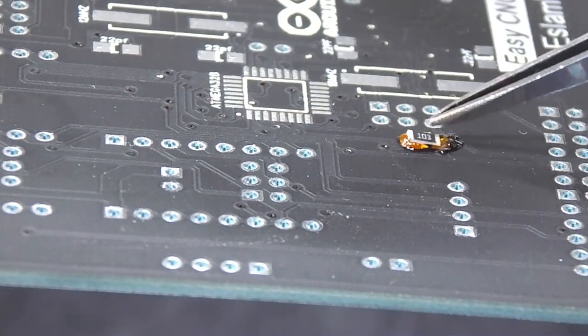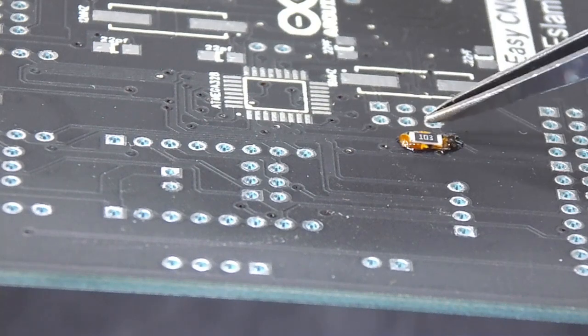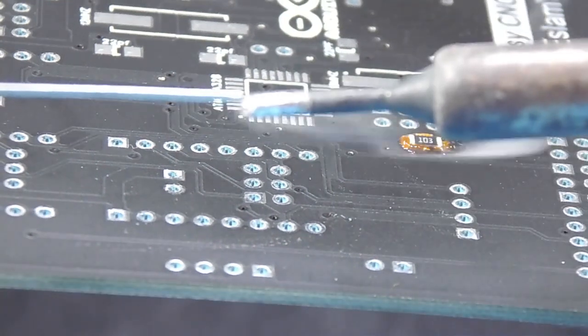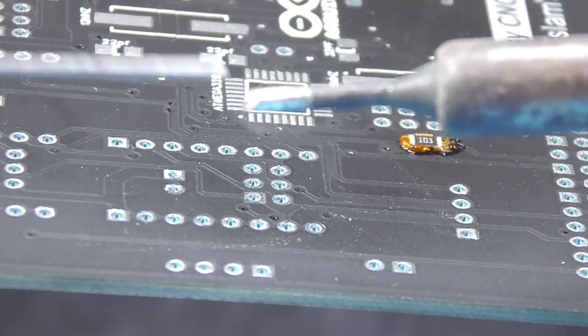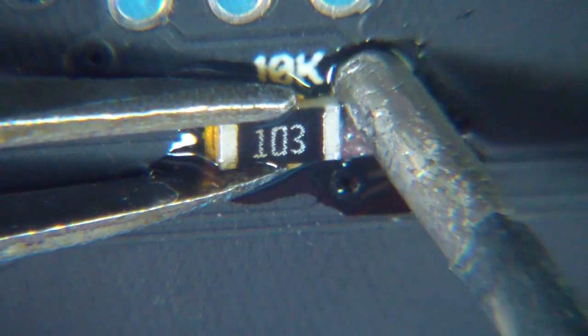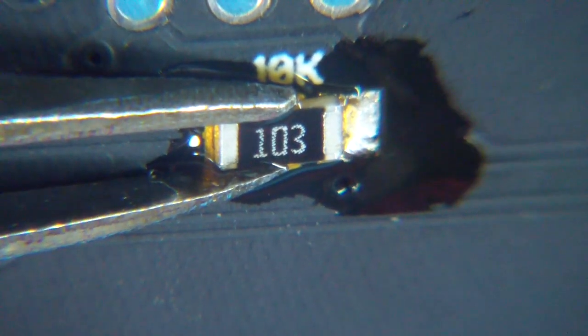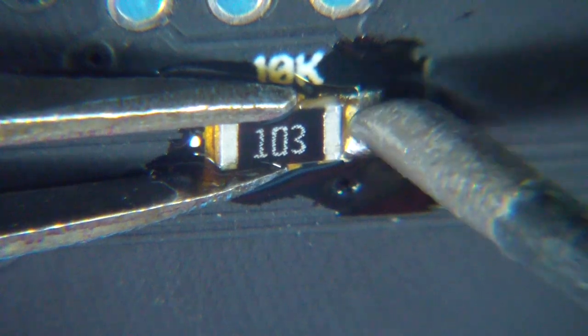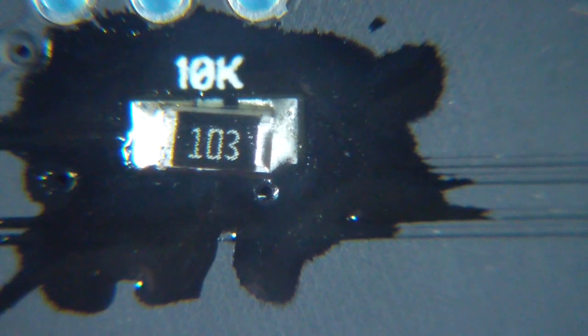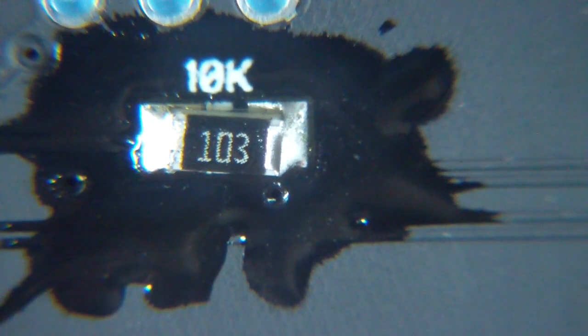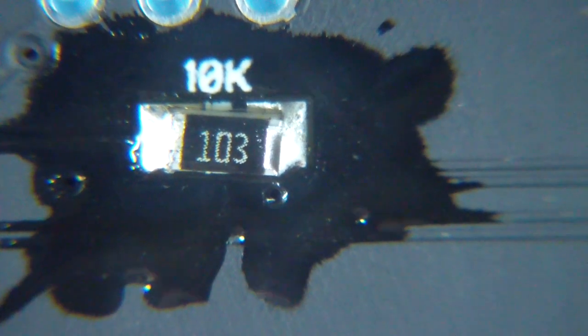Now let's solder this component. Apply small amount of solder to the tip, hold the component in place, then apply soldering over the component. As you see here, the solder joint is pretty shiny and the amount is not too much or insufficient.